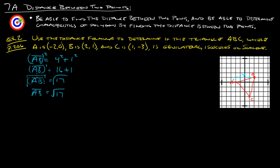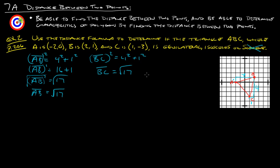We figured out what AB is. Now let's do the same thing to find BC and AC. For B to C, that's 4 units and 1 unit — BC is the exact same as AB. BC squared equals 4 squared plus 1 squared also, so BC equals the square root of 17. So we know those two sides are the same, which means it's going to be either equilateral or isosceles — not scalene, since scalene requires three different side lengths.